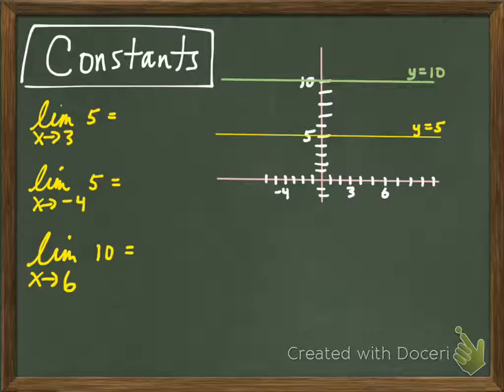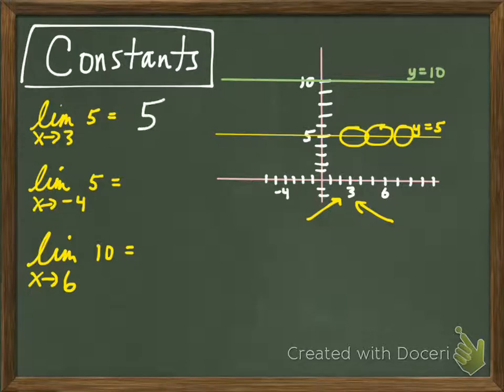We're going to be talking first about special polynomial functions called constants. If we look at this first one here, limit as x approaches 3 of the function y equals 5, I graphed the function right there so we can tie what we learned yesterday to what we're learning now. As x is approaching 3 from both sides, you can see the y values are, no matter where you are along this curve, the y values are all 5, and so we say the limit is 5.